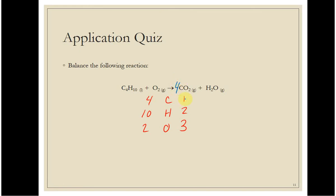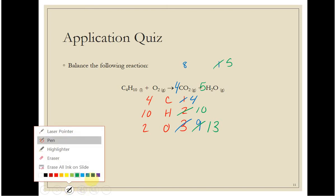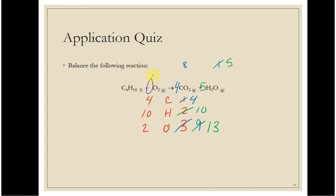Four times two is eight oxygens from CO₂, plus one from water, so eight plus one is nine oxygens. Now I'm going to balance my hydrogens by adding a five in front of water. Five times two is ten. But this five also applies to oxygen — so four times two is eight plus five times one is five; eight plus five is thirteen. Here's why it's a tricky question: there is no way to multiply the oxygen coefficient by two to get thirteen, since thirteen is indivisible by two.